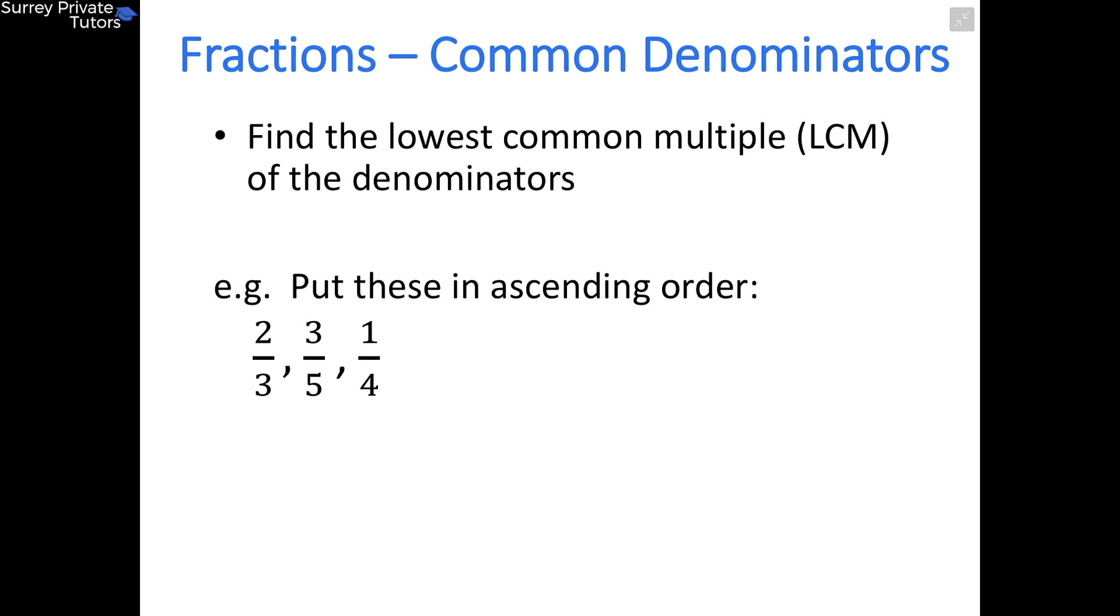I think the easiest way to demonstrate this is to go through an example. So here we need to put these three fractions in ascending order. To put them in an order, it's much easier if you've got the same denominator for each fraction. So the first step is find the lowest common multiple of those denominators, which are 3, 5, and 4.